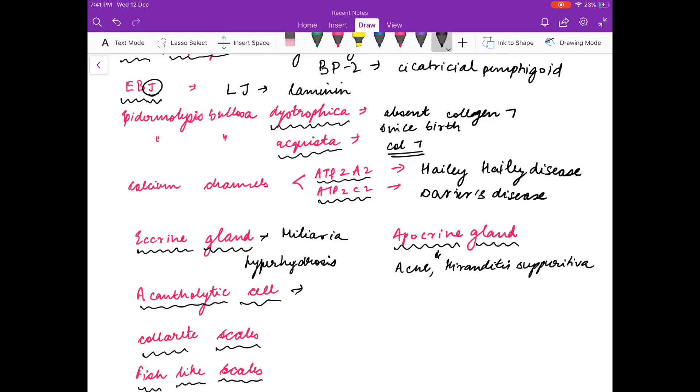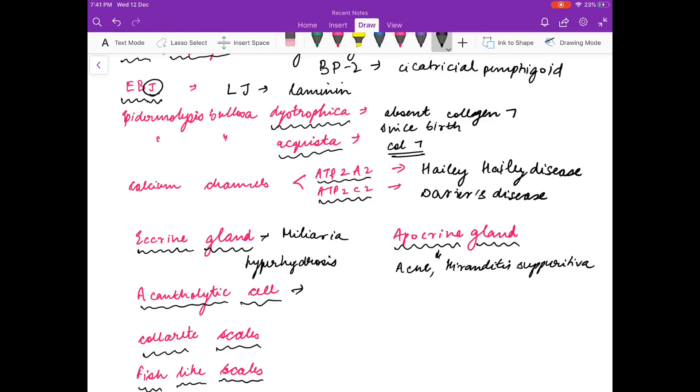Acantholytic cells are seen in... first of all, what are acantholytic cells? Acantholytic cells are rounded keratinocytes. Normally they are hexagonal in shape, so when there is damage to these desmosomes, they lose their shape and they become rounded, and they are found in pemphigus, staphylococcal scalded skin syndrome, and Hailey-Hailey disease.